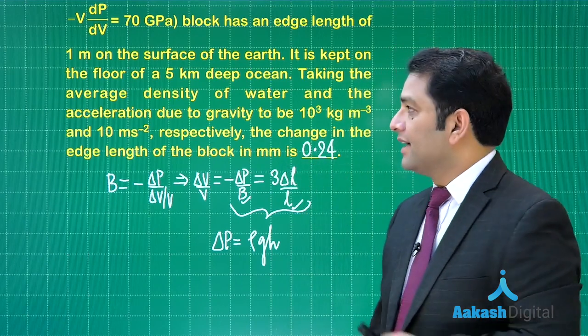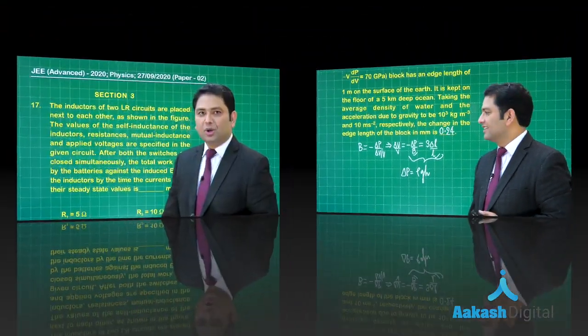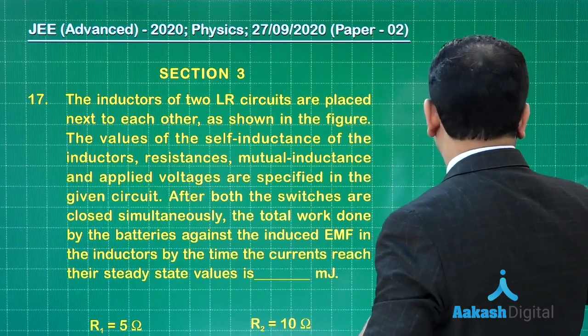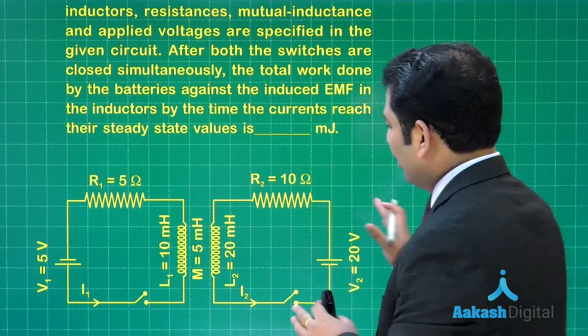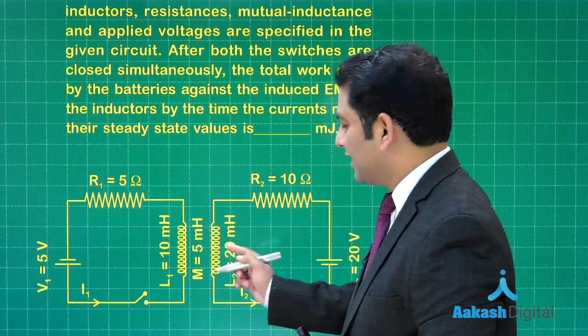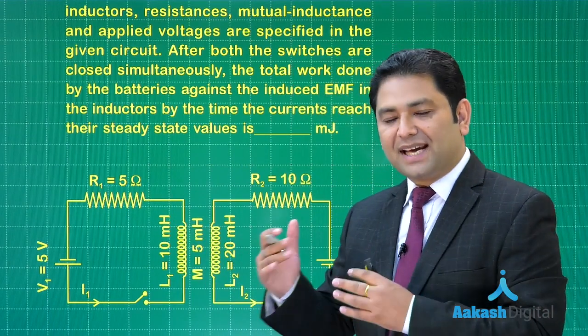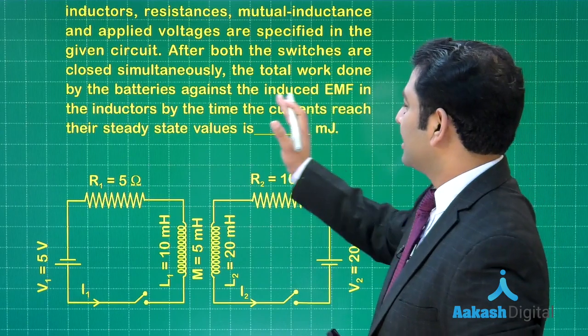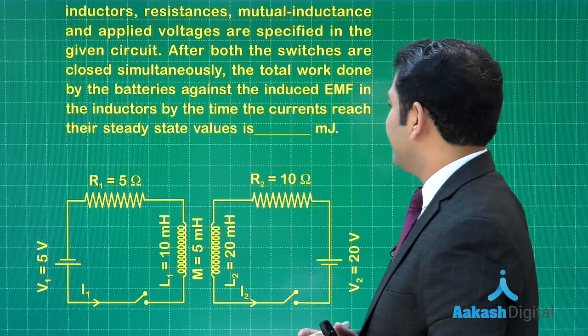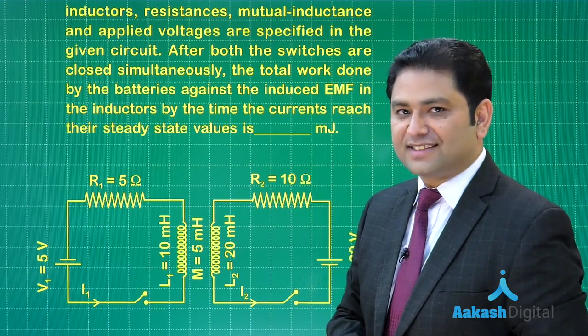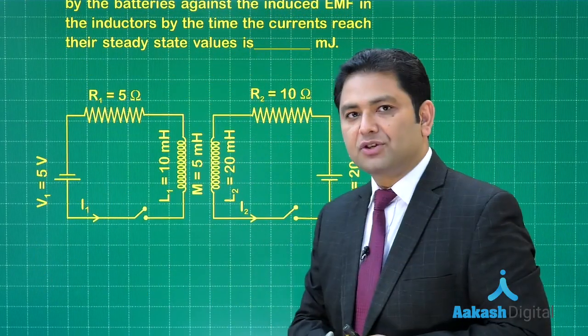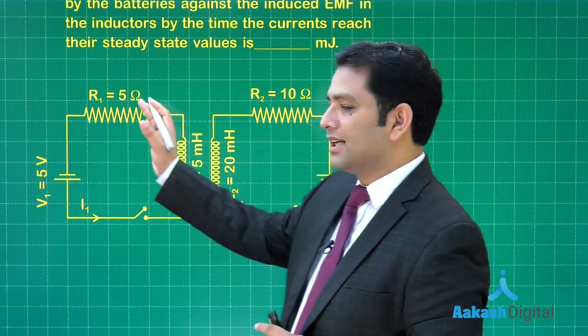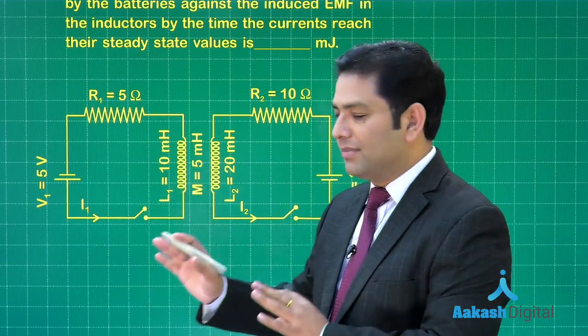Let us go to the 17th question. Question number 17 is from electromagnetic induction, specifically the circuit part, and here is all the data corresponding. Look here, the mutual inductance has also been given, so this time a little bit of value addition in the question. And what are we supposed to find? The total work done by the batteries against the induced emf by the time the current reach their steady state. So basically, the work done is to be calculated only against the induced emf.